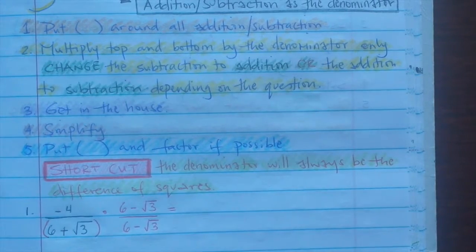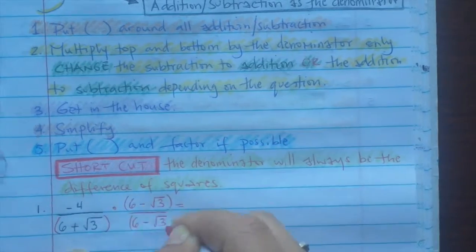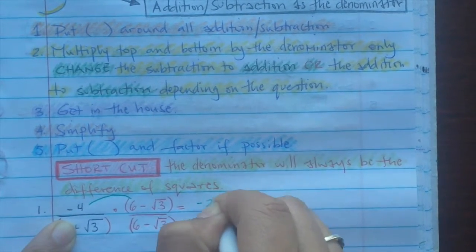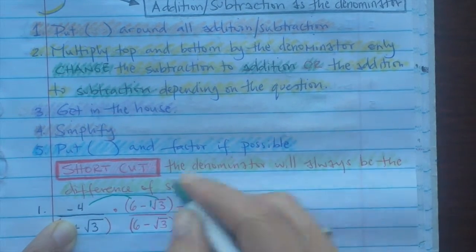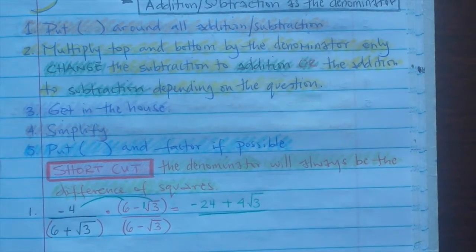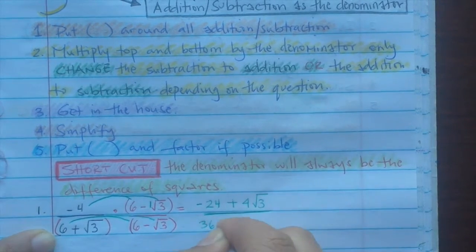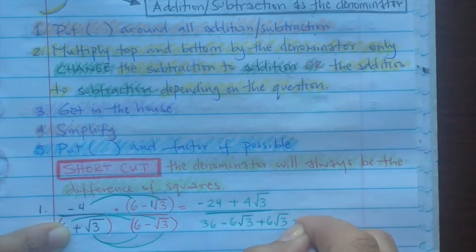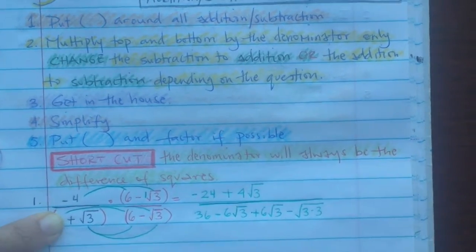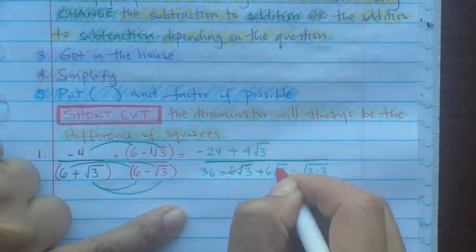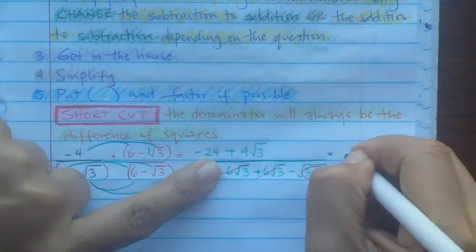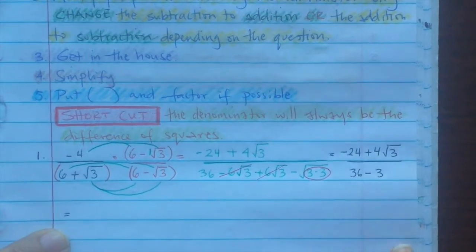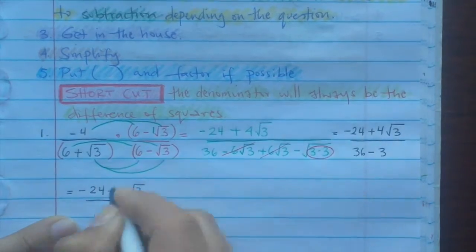Multiply as normal. Put negative 4 in the house — negative 4 times 6 gives you negative 24, and then negative times a negative is a positive, so that's positive 4 radical 3. Over: make sure each person says hi — 6 times 6 is 36, then negative 6 radical 3, then 6 radical 3, and finally you have two 3's inside which is a book. Now negative 6 radical 3 plus 6 radical 3 is 0, so those cancel. So we have negative 24 plus 4 radical 3 over 36, and take the book out — so minus 3.